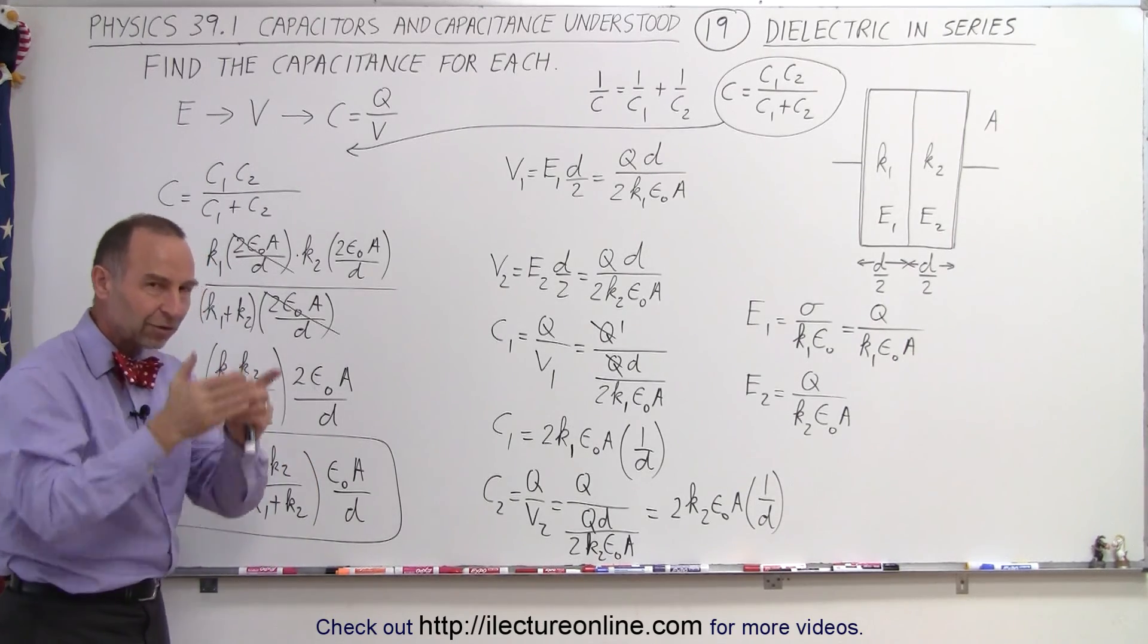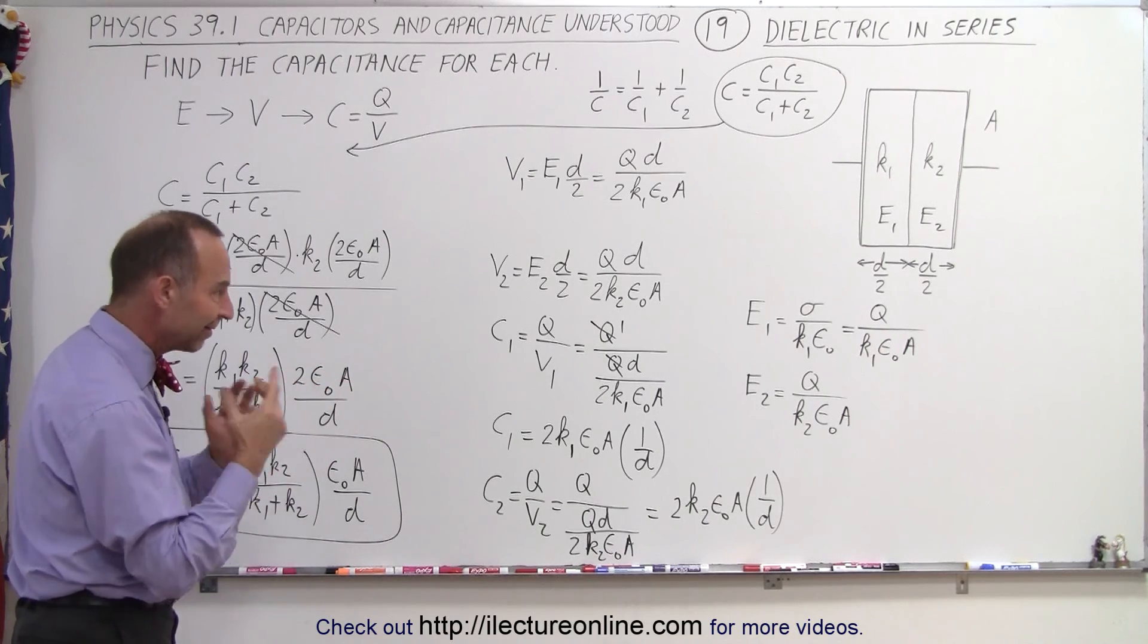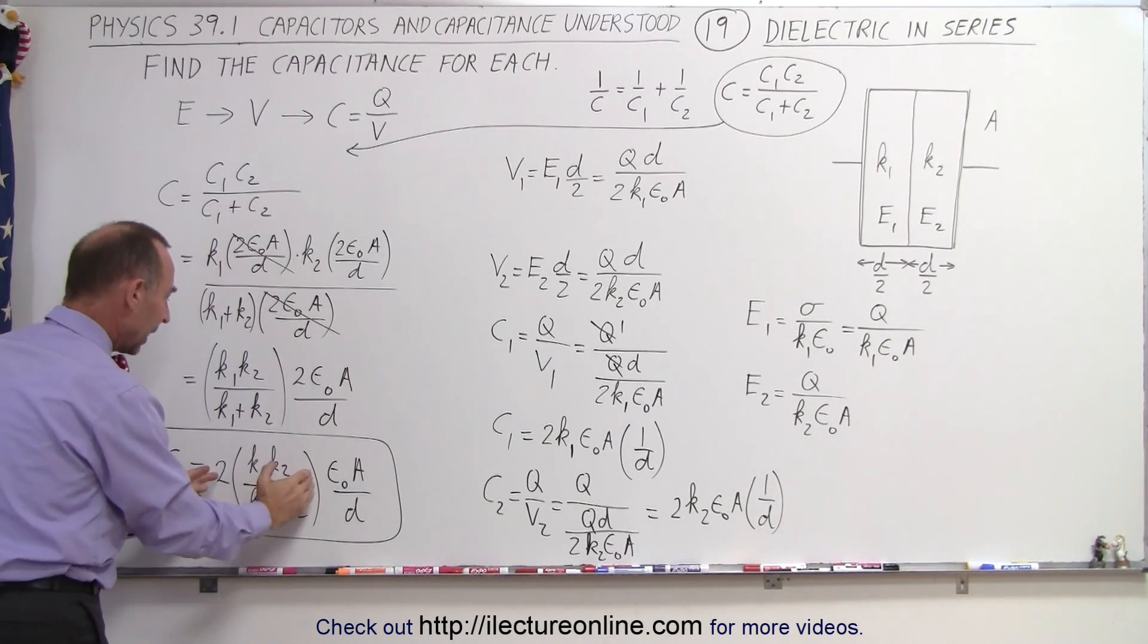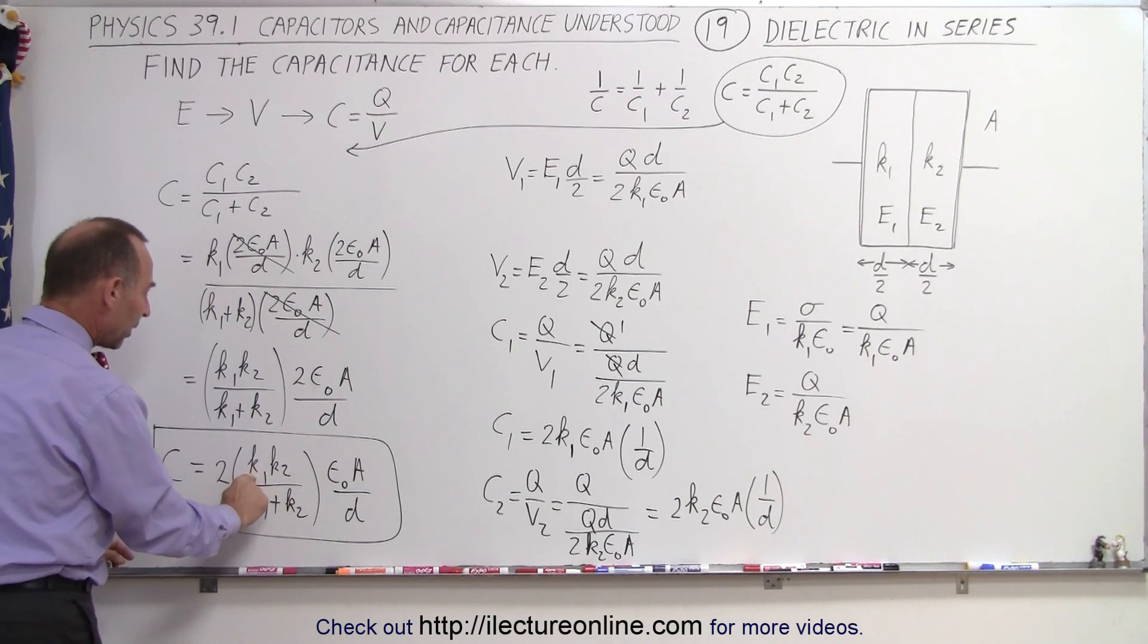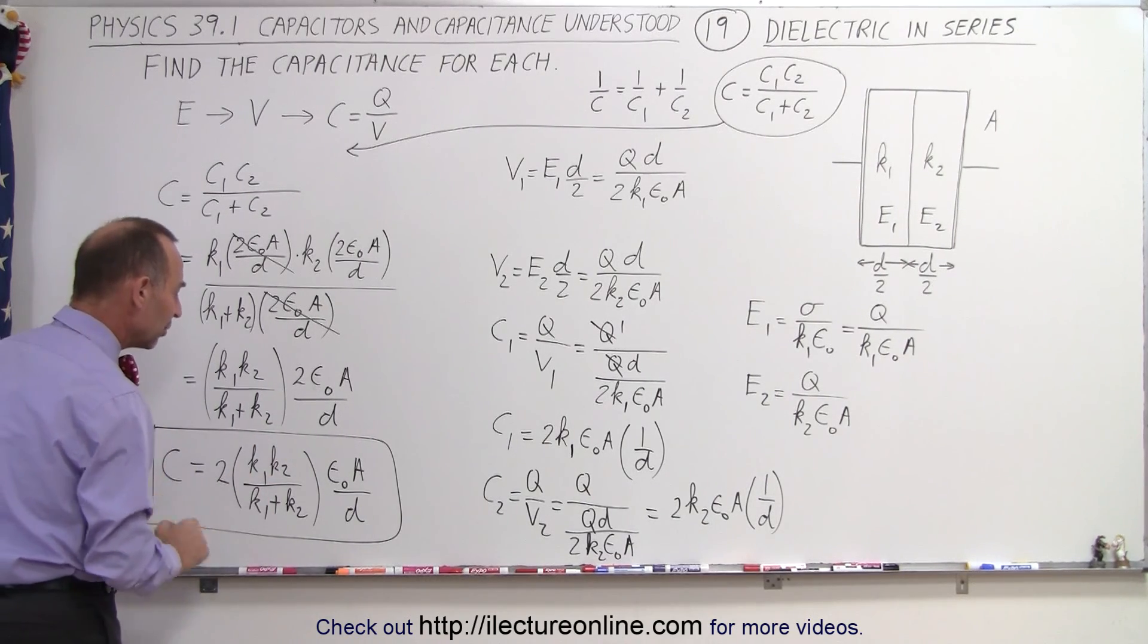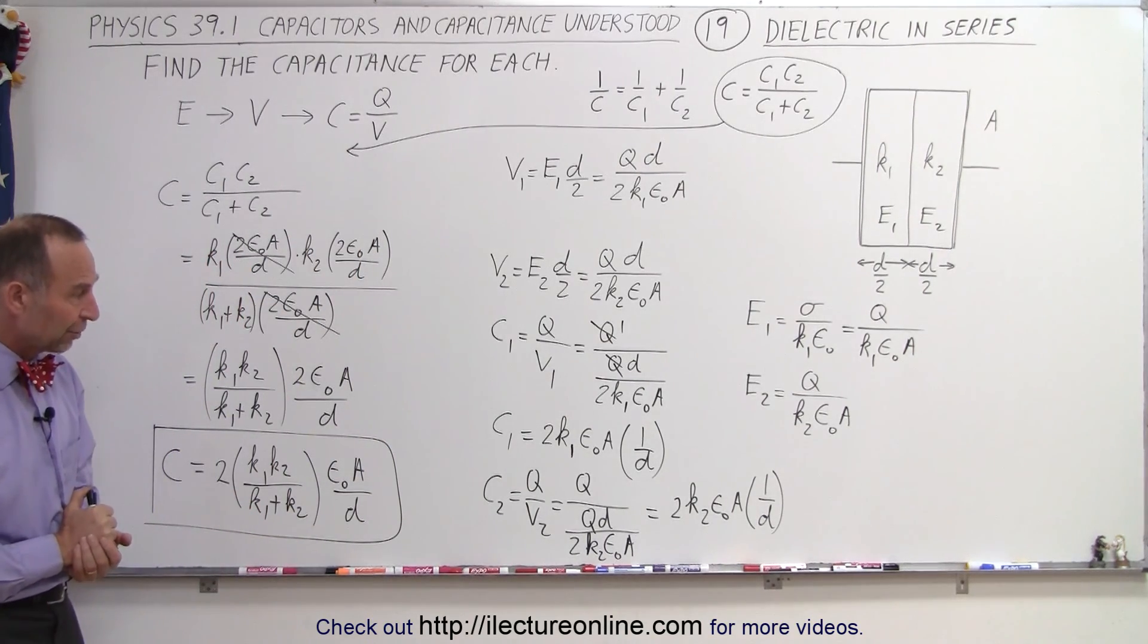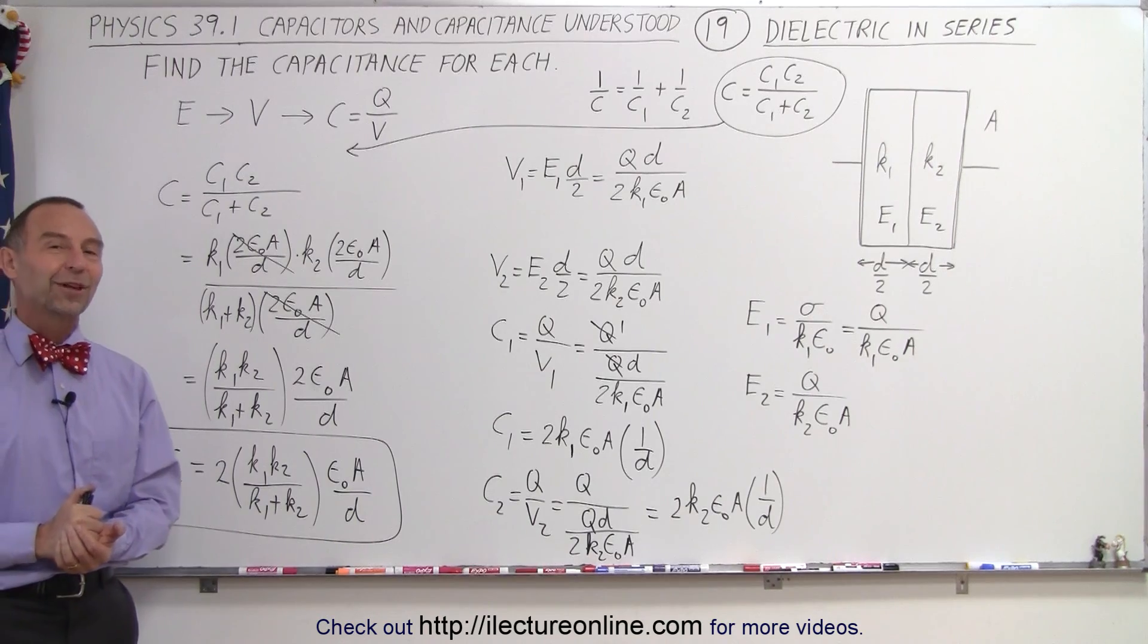But since there's two dielectrics and they're vertically oriented so that we have two portions of that in series, then the k is now replaced by two times the product k1 times k2 divided by k1 plus k2, and that will give you the capacitance of a capacitor with that type of dielectric arrangement. And that's how it's done.